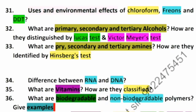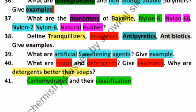Biodegradable and non-biodegradable polymers and their monomers like Bakelite, Nylon-6, Nylon-6,6, Nylon-2, and natural rubber. Similarly, these definitions: tranquilizers with examples, analgesics, antipyretics, antibiotics. Similarly, artificial sweetening agents with examples. These are short one or two mark questions. Soaps and detergents with examples. Why detergents are better than soaps, and the limitations of detergents. Carbohydrates and their classification. Thank you for watching and wish you all the very best.